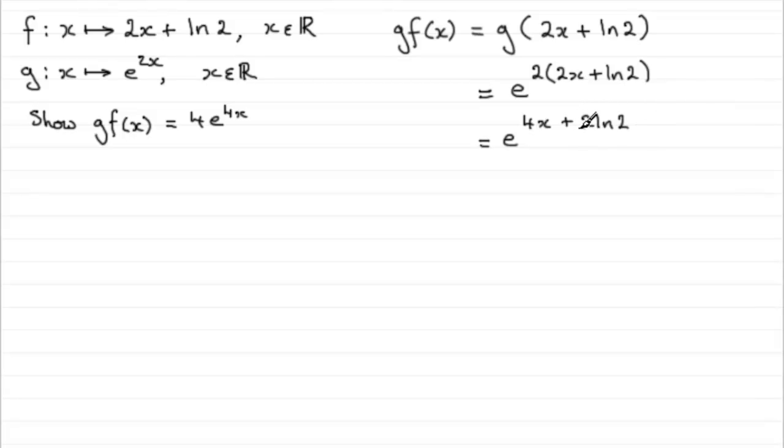Now this 2 here, okay, we could push this up as a power. Remember your power rule for logs: if you have a number at the front here, you can take it up as a power. So this becomes e to the 4x plus natural log of 2 squared, or 4.